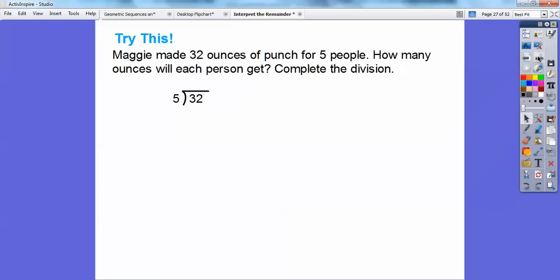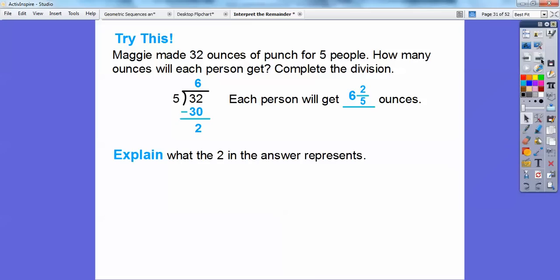Let's try this one. Try it again. Maggie made 32 ounces of a punch for five people. How many ounces will each person get? So we're going to go ahead and complete this division problem. So five times six is 30, so only subtract. So let's do what we did the last time. We start at the top, and we go clockwise. So start at the top, six and two fifths. So each person is going to get six and two fifths ounces right there. Explain what the two in the answer represents. It's the number of ounces that were left over after the five people get exactly six ounces of punch each. And so if you wanted to, they can get two fifths of an ounce on top of that each right there.